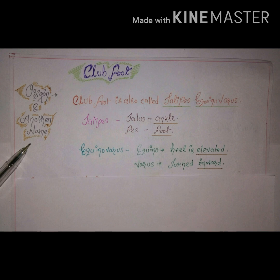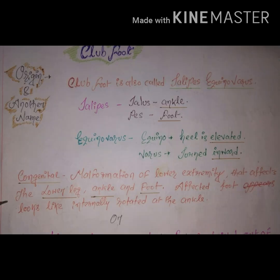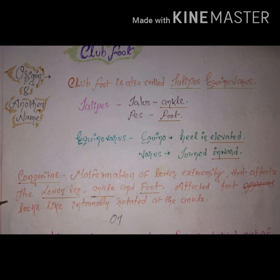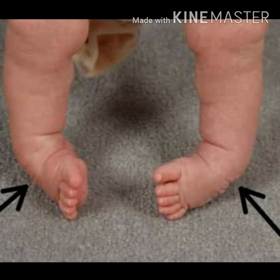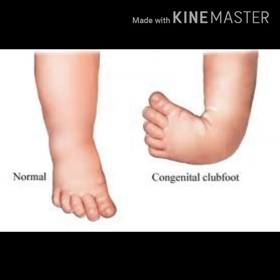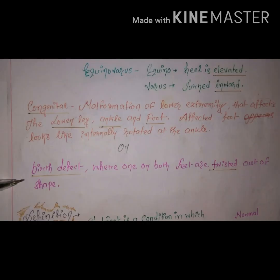I will show you the diagram. Basically, clubfoot is a congenital malformation of the lower extremity — meaning the leg — that affects the lower leg, ankle, and foot. The affected foot looks like it is internally rotated at the ankle. See the diagram: you can see the legs are rotated internally, mainly at the ankles. When the baby is standing, you can see the difference between normal and clubfoot positioning.